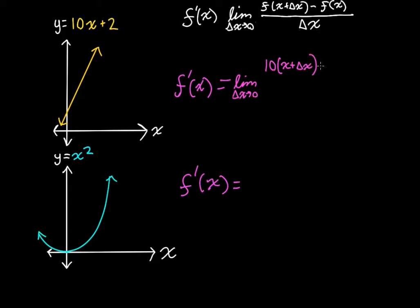We're just plugging it in for x plus 2 minus just the function of x. Function of x that's just 10x plus 2 divided by delta x. We just write delta x.